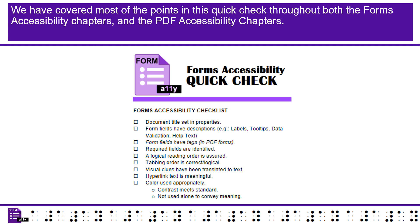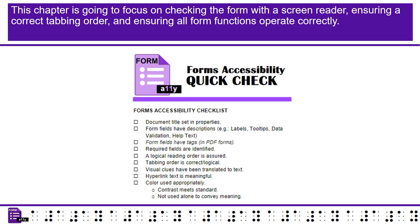We have covered most of the points in this Quick Check throughout both the Forms Accessibility Chapters and the PDF Accessibility Chapters. This chapter is going to focus on checking the form with a screen reader, ensuring a correct tabbing order, and ensuring all form functions operate correctly.